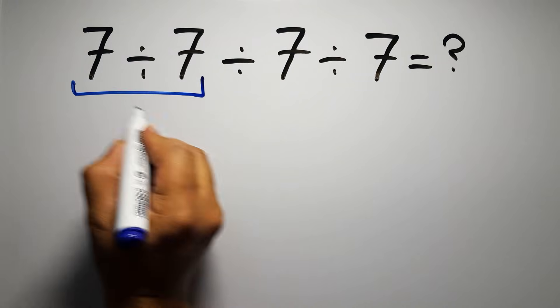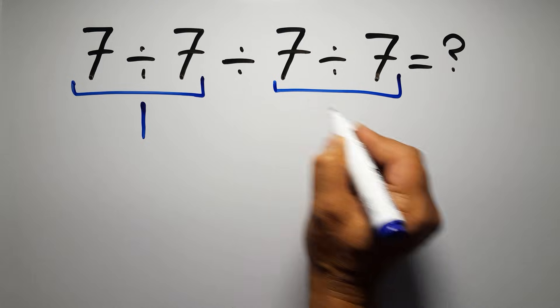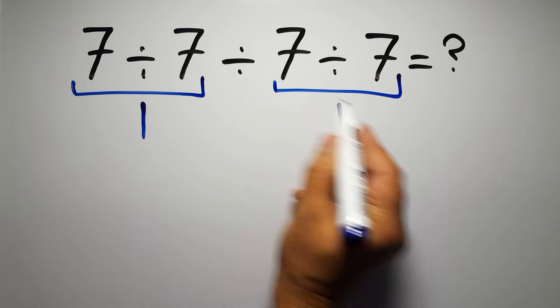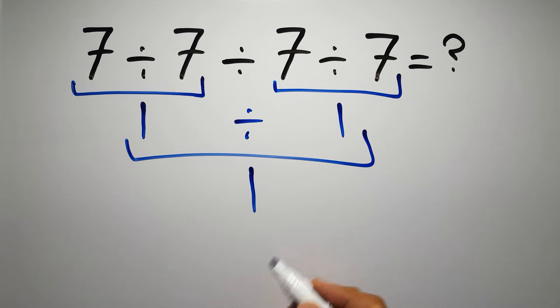7 divided by 7 gives us 1, and again here we have 7 divided by 7. So 1 divided by 1 is just 1, but this answer is not correct.